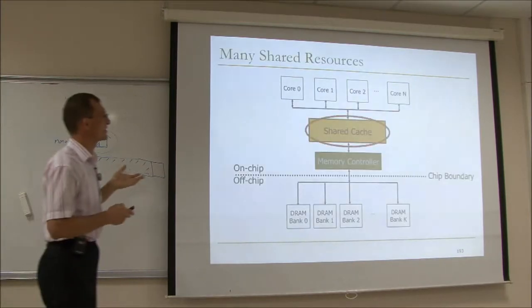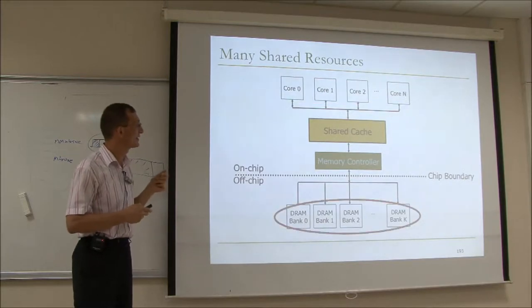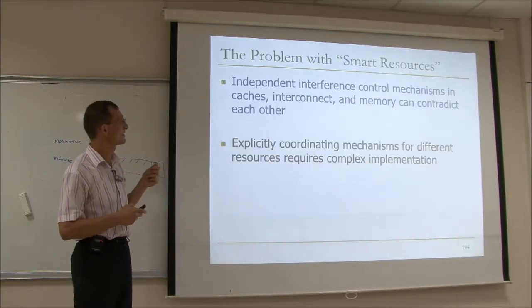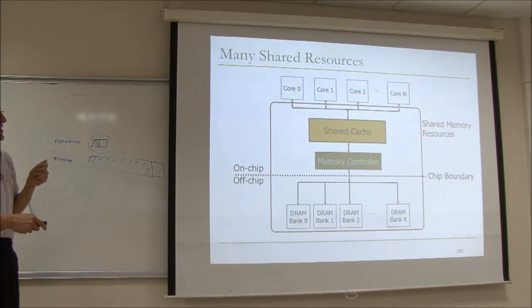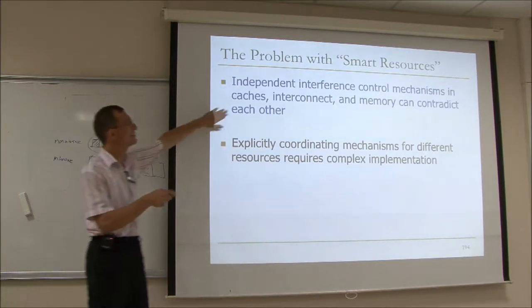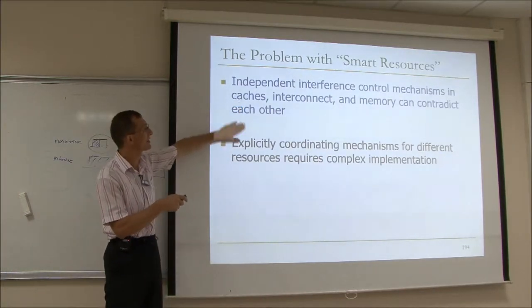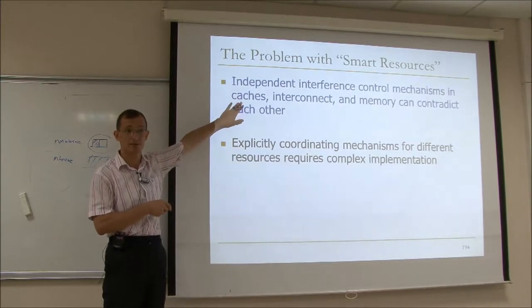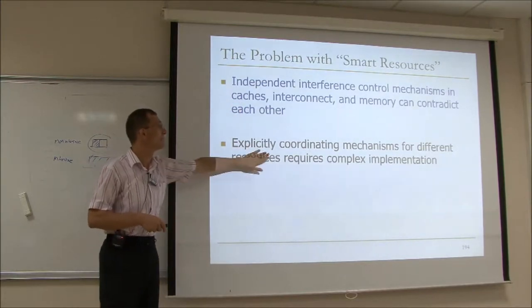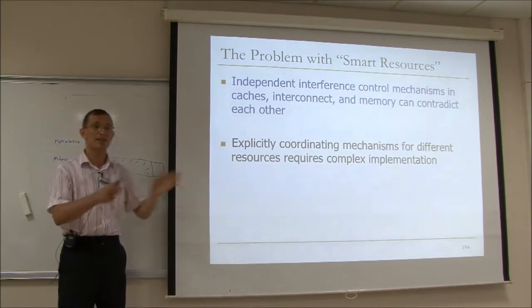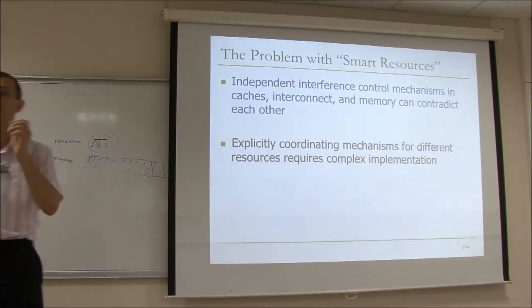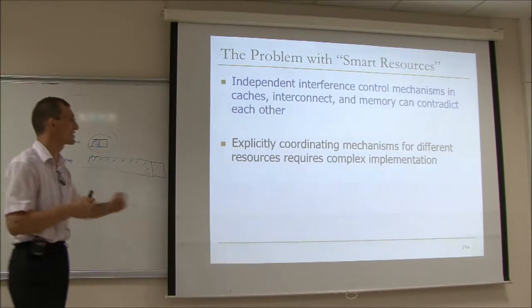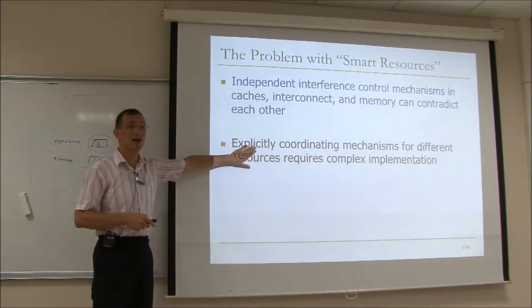If you look at a multi-core system, there are many shared resources. Threads interfere within these resources. And if you have a smart cache, a smart memory controller, and a smart interconnect, what might happen is the independent mechanisms you design there can contradict each other. And this is what we've seen.